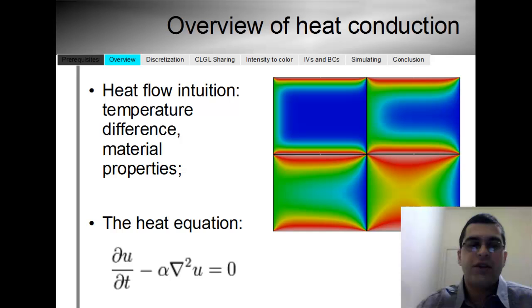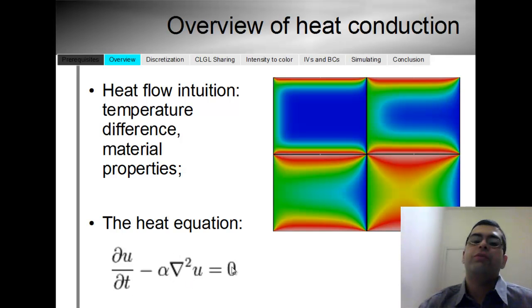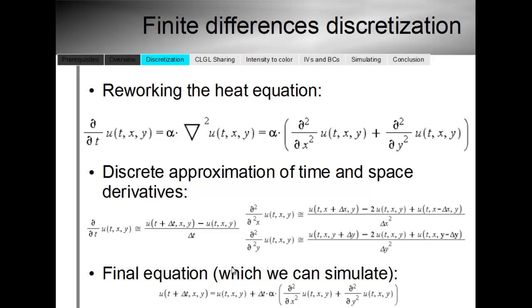Let's come back to the heat equation and remember that we had a partial derivative with respect to time and the Laplacian of the temperature distribution. How do we go about transforming this equation into something we can simulate? We have the time derivative of u with respect to time equals alpha times the Laplacian of u, which expands to alpha times the second derivative of u with respect to x plus the second derivative of u with respect to the y space coordinate.